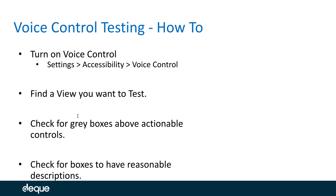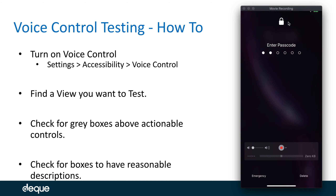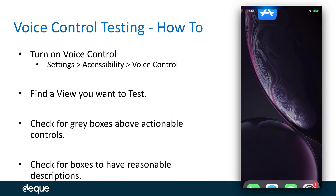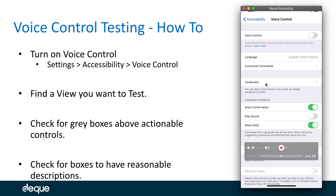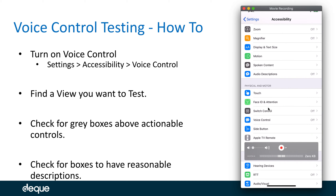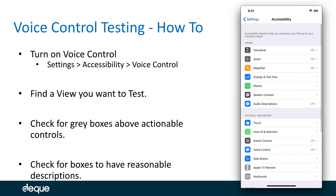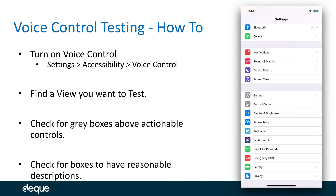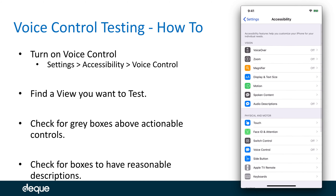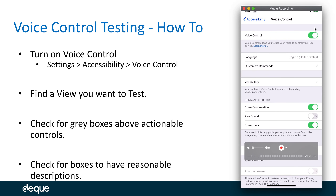Let me show you how this works. I'm now casting my device. I'm going to turn on voice control by clicking on this settings icon and finding accessibility. New in iOS 13, they've reorganized the settings area — accessibility now has its own category. We go to accessibility, find voice control under the heading Physical and Motor, and turn it on.